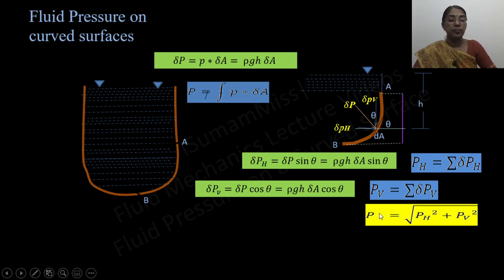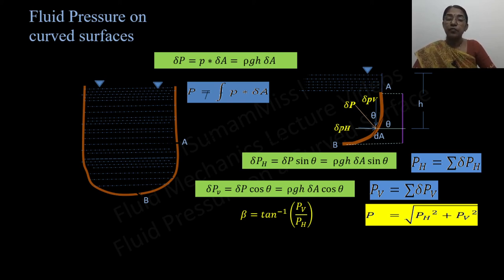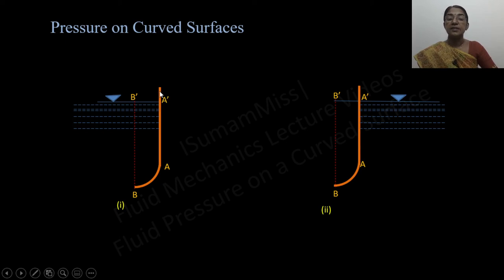The resultant hydrostatic force R = √(P_H² + P_V²), and its direction is given by θ = tan⁻¹(P_V / P_H). This calculation is very useful in the design of gates used in spillways, dams, locks, and so on.